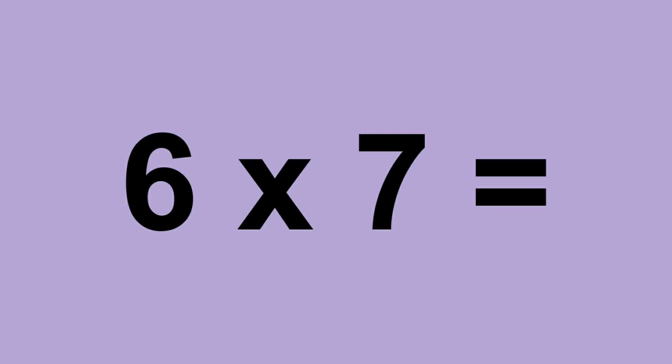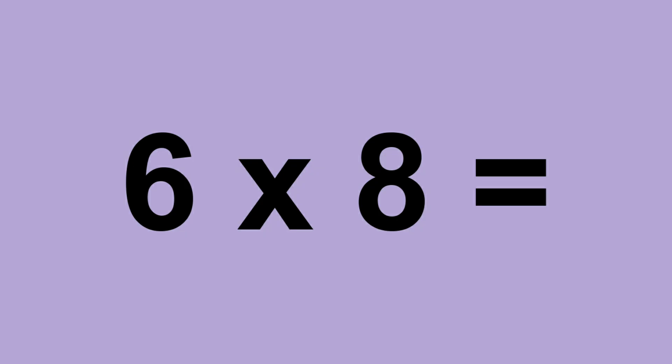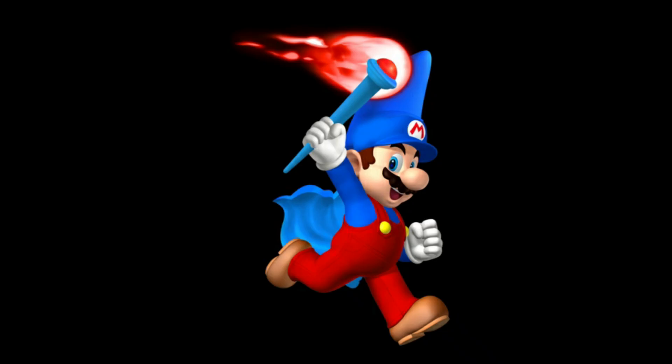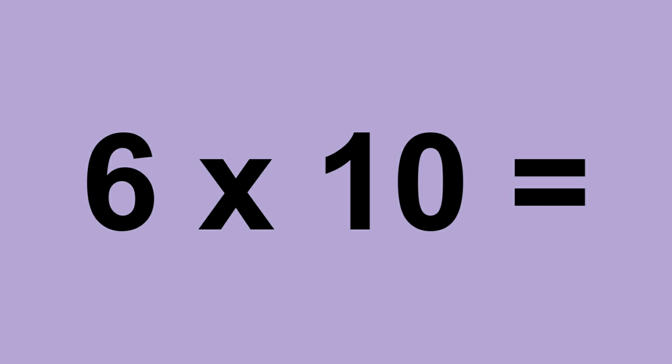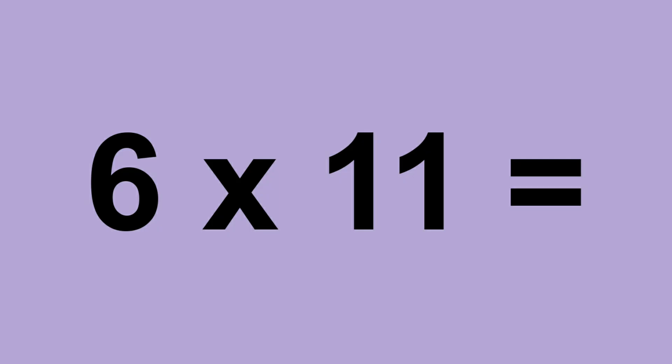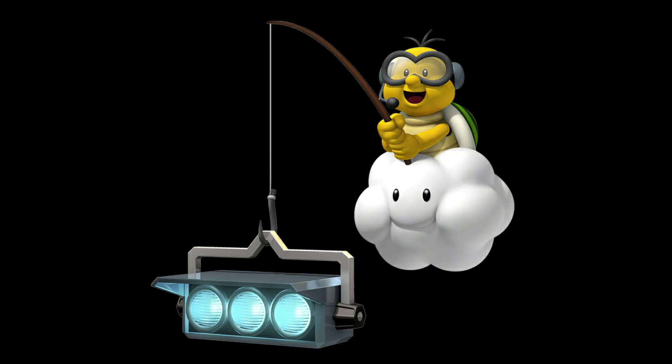Six times six equals thirty-six. Six times seven equals forty-two. Six times eight equals forty-eight. Six times nine equals fifty-four. Six times ten equals sixty. Six times eleven equals sixty-six. Six times twelve equals seventy-two.